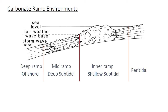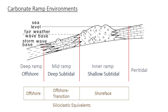Carbonate ramps are subdivided into environments using fair weather and storm wave base boundaries — the same boundaries used in siliciclastic shelves, but the environments are given different names in the carbonate system. The shallowest environment, above fair weather wave base but below the low tide line, is called the shallow subtidal. Between fair weather and storm wave base is the deep subtidal, and below storm wave base is the offshore environment. These are sometimes also called inner, mid, and outer ramp environments, but we'll use shallow subtidal, deep subtidal, and offshore. Here's how they equate with the names given to similar regions on a siliciclastic shelf.